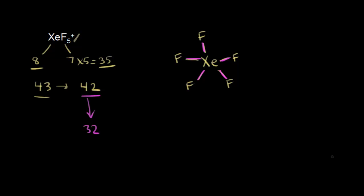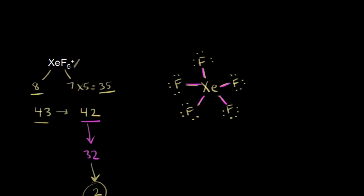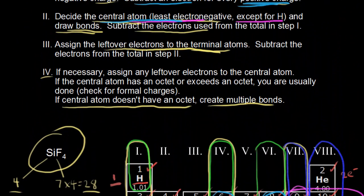Step three: assign leftover electrons to the terminal atoms — the fluorines, which follow the octet rule. Each fluorine already has two electrons around it, so I'll give each one six more. Six electrons times five fluorines is 30. That leaves 2 valence electrons still unaccounted for after step three — a situation we haven't encountered before.